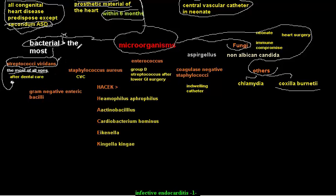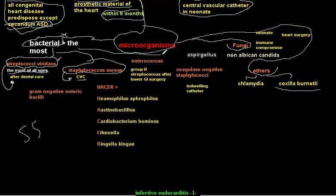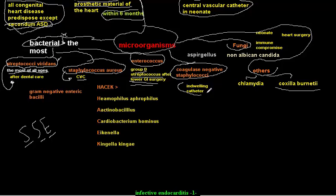Staphylococcus aureus is very important and especially associated with central venous catheters. Enterococcus, or Group D Streptococcus, mostly comes after lower GI surgery. So the key organisms are: Streptococcus viridans, Staphylococcus aureus, and Enterococcus.